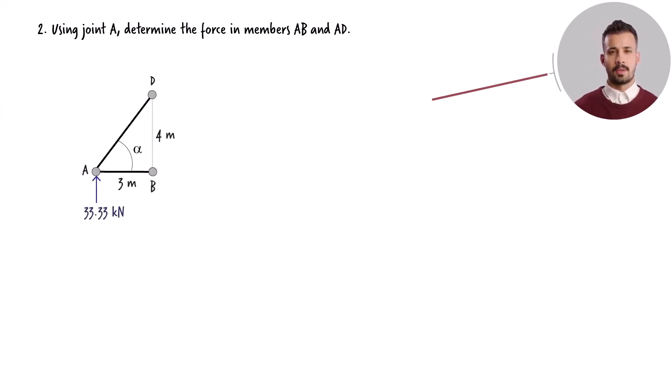Joint A connects two truss members, AB and AD. Before formulating the equilibrium equations, it's essential to calculate the angle that member AD forms with the horizontal axis. Given the known geometry of the truss, we can write tangent alpha equals 4 over 3, or alpha equals 53.13 degrees.